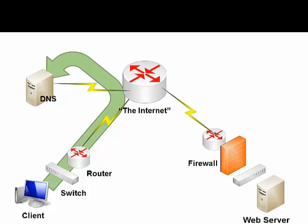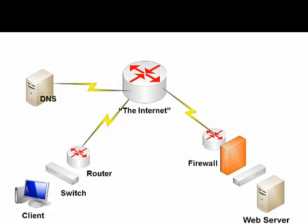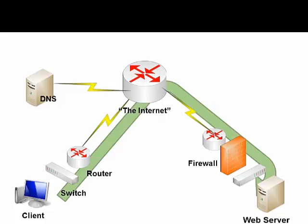Now that the client knows the IP address it needs to connect to, it will go across the internet — out of its switch, through its router, out into the internet, eventually reaching the data center that the web server is located at. It's going to pass through a firewall and switches, and it's finally going to reach the web server.